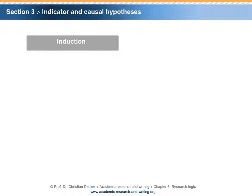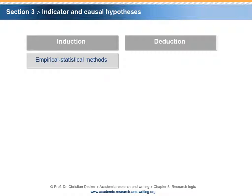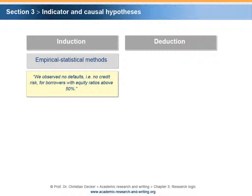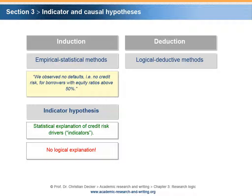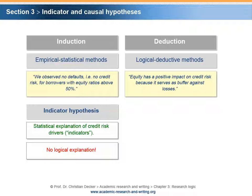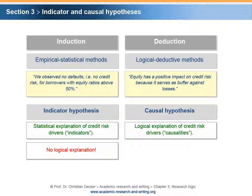Let us compare induction and deduction. Inductive reasoning uses empirical statistical methods. The statement 'we observed no defaults for borrowers with equity ratios above 50%' is an indicator hypothesis based on a statistical explanation of credit risk drivers. The downside is that it does not necessarily provide a logical explanation. Deductive reasoning applies logical deductive methods. The statement 'equity has a positive impact on credit risk because it serves as a buffer against losses' is a causal hypothesis based on a logical explanation of credit risk drivers. The downside is that it is not necessarily based on statistical proof.